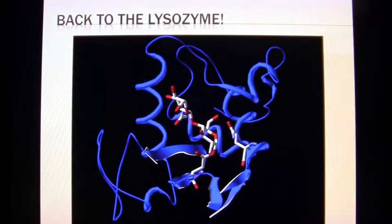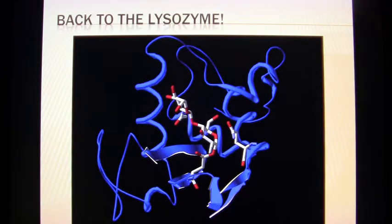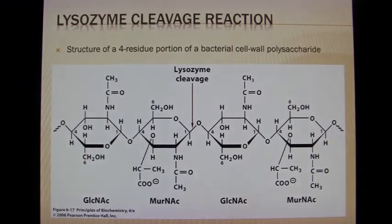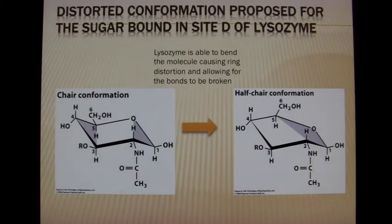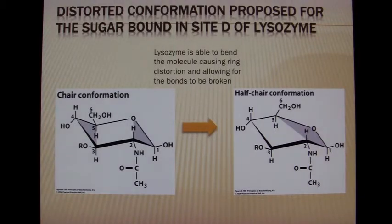Now let's get back to the lysozyme. Here we show the cleavage point for the beta 1,4 linkage that we discussed earlier. It takes the NAM from this stable chair conformation and wrestles it to this half-chair conformation, causing bond strain which allows it to be broken more easily.